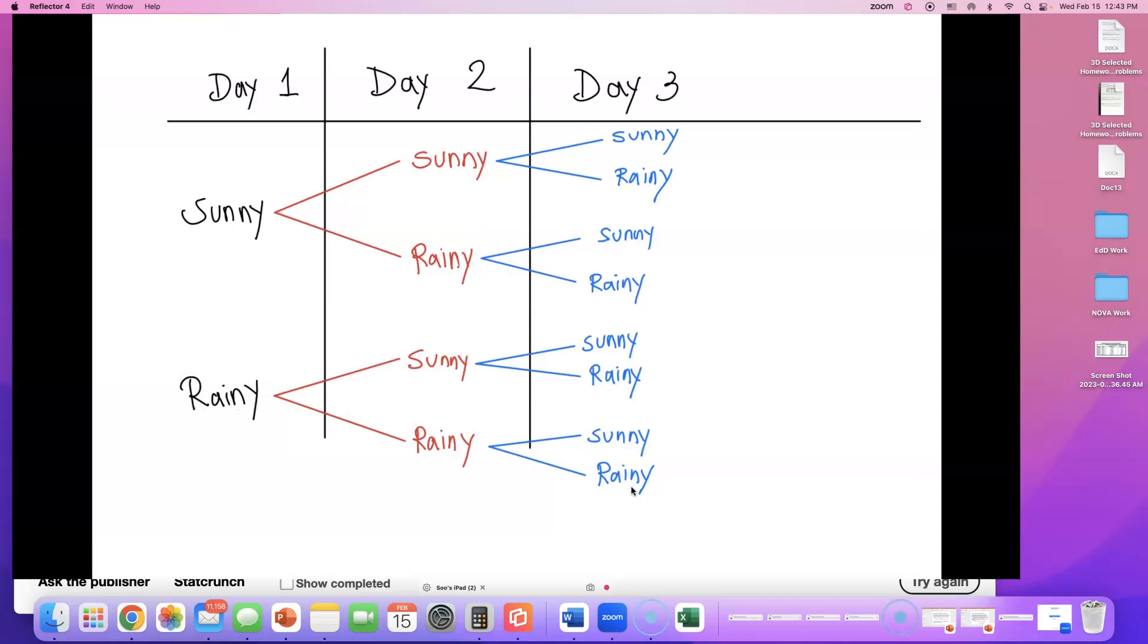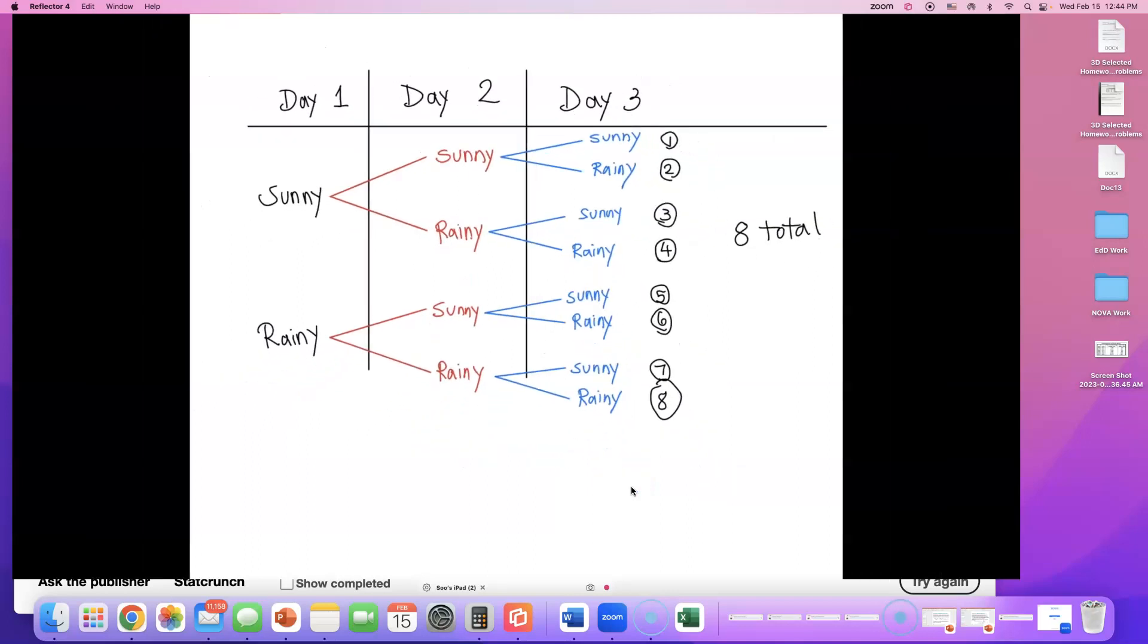These are all the possible options. So let me count how many these options are. There are one, two, three, four, five, six, seven, eight different options available. Each of these end of the branch are different possibilities. So there are eight total possible weather combinations. We could have easily found this by doing two times two times two, you will get eight for the total.